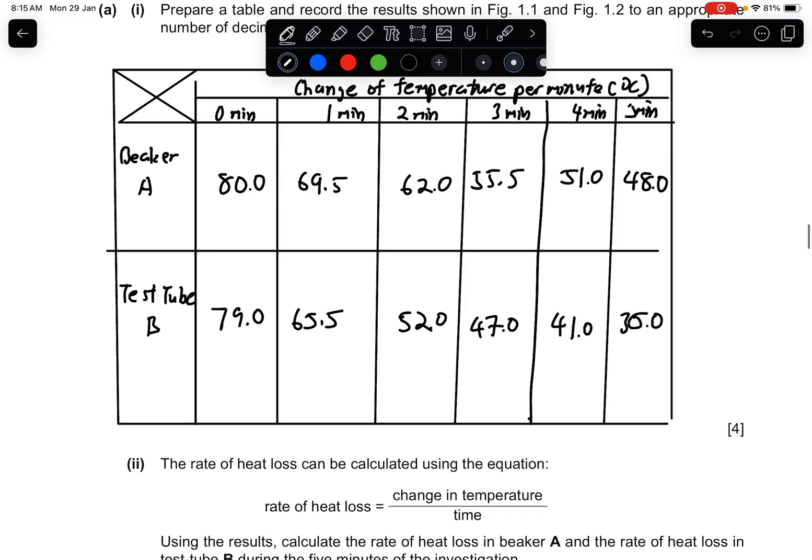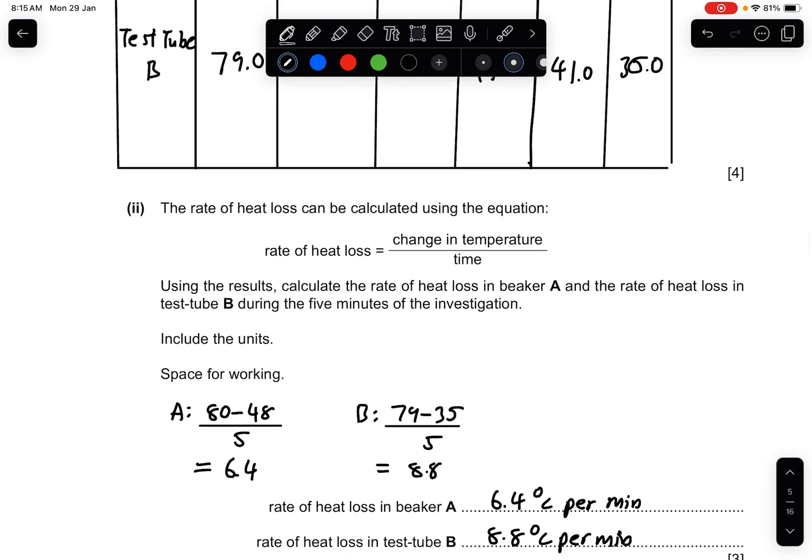This is how the graph will look like. Part two: the rate of heat loss can be calculated using the equation rate of heat loss equals change in temperature over time. Using the results, calculate the rate of heat loss in beaker A and the rate of heat loss in test tube B during the first five minutes of the investigation.